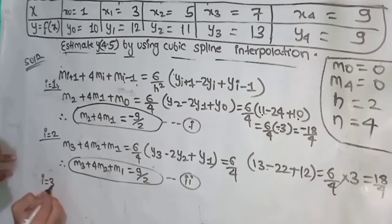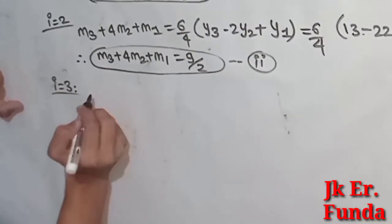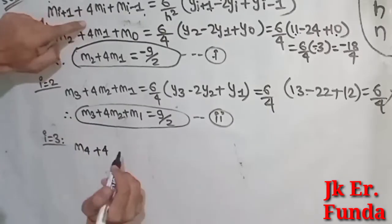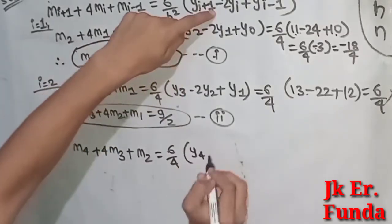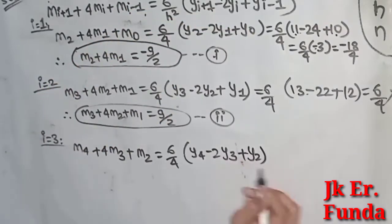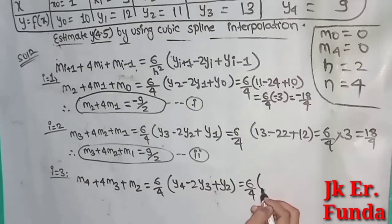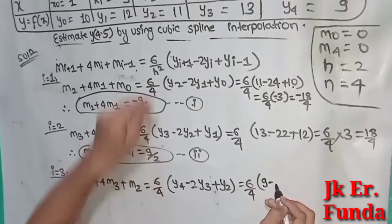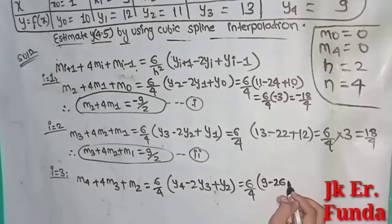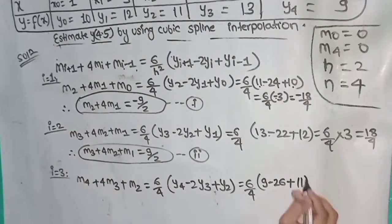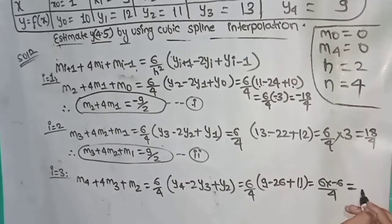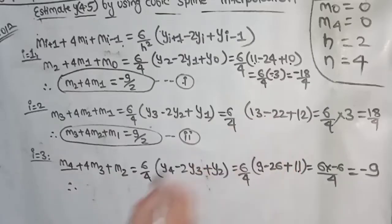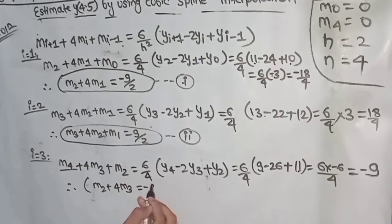Taking i equals 3: M_4 plus 4M_3 plus M_2 equals 6 divided by 4 times (y_4 minus 2y_3 plus y_2). Substituting: y_4 equals 9, minus 2 times y_3 equals minus 2 times 14 equals minus 26 (wait, correction: 2 times 13 equals 26), plus y_2 equals 11. So 11 plus 9 equals 20, minus 26 equals minus 6. Then 6 times minus 6 divided by 4 equals minus 36 by 4 equals minus 9. Since M_4 equals 0, we get M_2 plus 4M_3 equals minus 9. This is equation number 3.